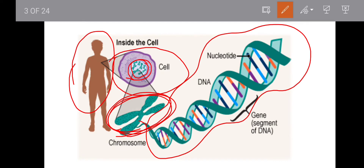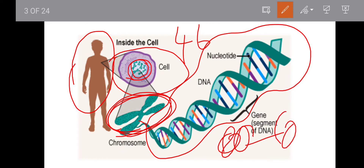There are 23 pairs of chromosomes, and each chromosome is made up of DNA tightly coiled many times around proteins called histones. These histones and proteins are wrapped up to form the chromosome structure.